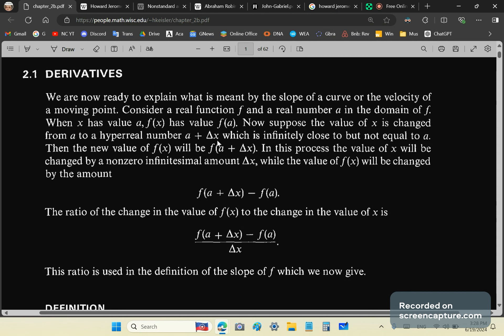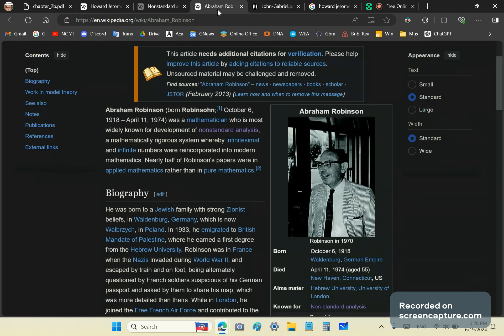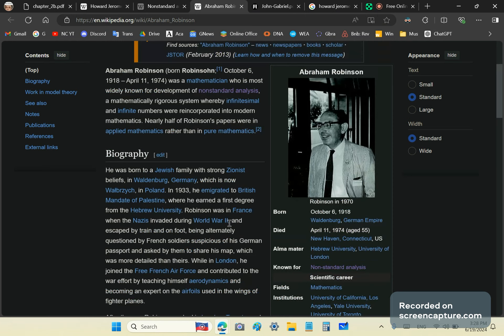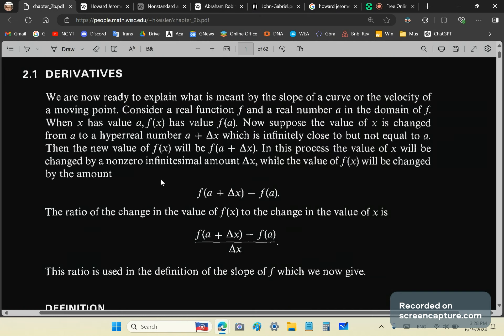So wait a minute, he says that a and a plus delta x are infinitely close but not equal. That means that one number follows the other. That means that a plus delta x follows a and there is no number between a and a plus delta x. And that can be the only explanation, which is total garbage.